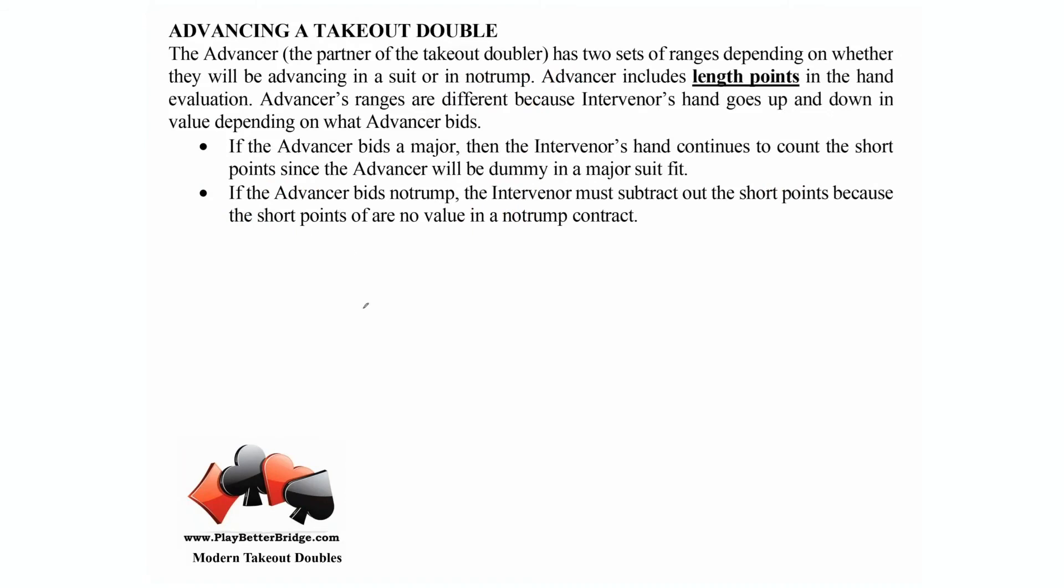Advancing the takeout double. Advancing means you're the advancer. The auction has gone one heart by opener, intervener has doubled, and responder passes. We're going to look at advancer's options when responder passes and when responder takes a call. In our example here, one heart by opener, double by intervener, responder passes.